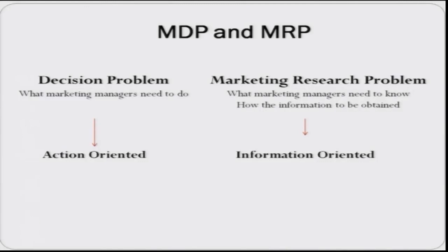The management decision problem is about what marketing managers need to do — it is action-oriented. On the other side, the marketing research problem is focused on what marketing managers need to know to solve that problem and how the information is to be obtained. So it is information-oriented.